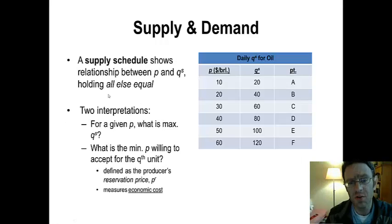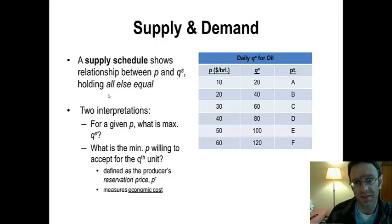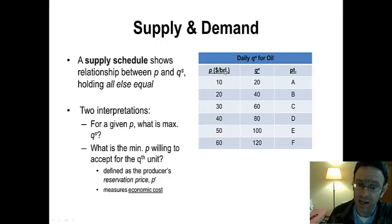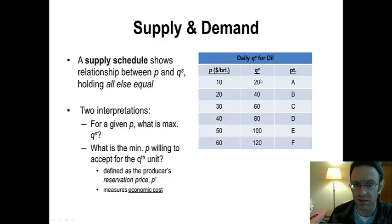The way that we do this at the start is we construct a supply schedule. The supply schedule, as you see here, will have one column for the price per unit of a commodity — in this case the daily quantity supplied of oil measured in barrels. As the price per unit rises from $10 a barrel to $30 a barrel to $60 a barrel, we see that the sellers' willingness to supply, their quantity supplied, also rises. We label each one of these price-quantity combinations with a letter.